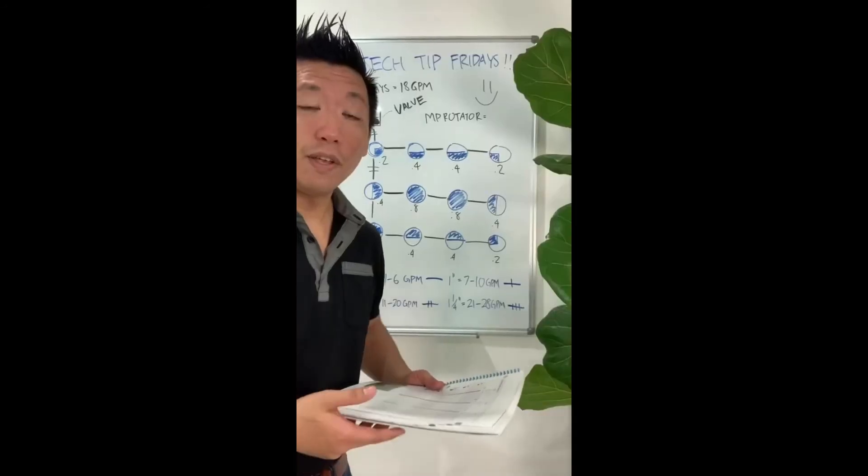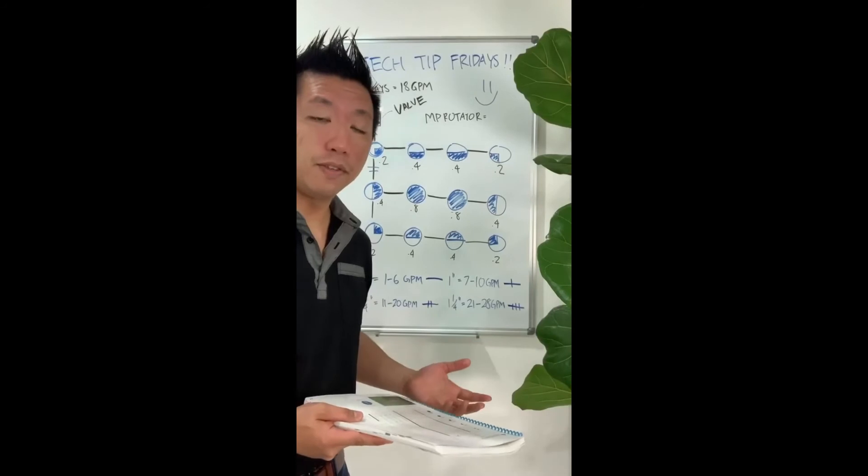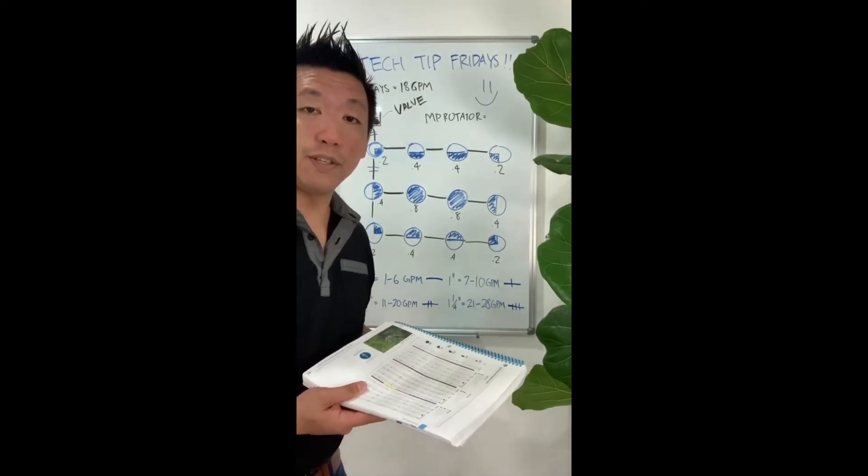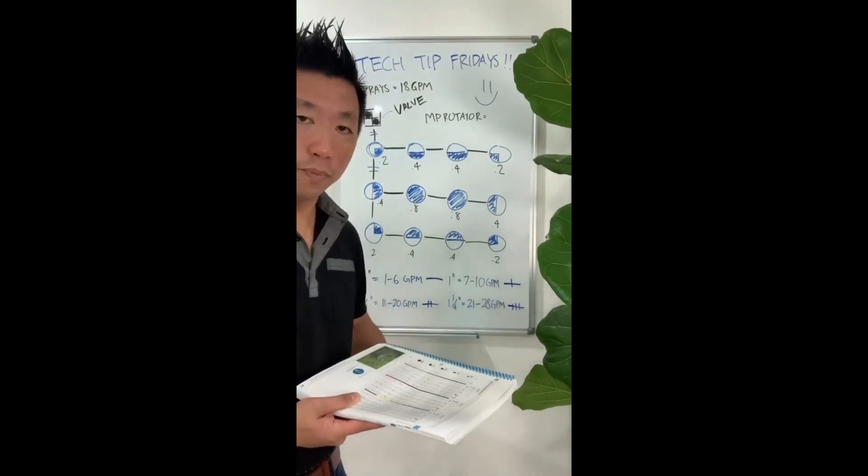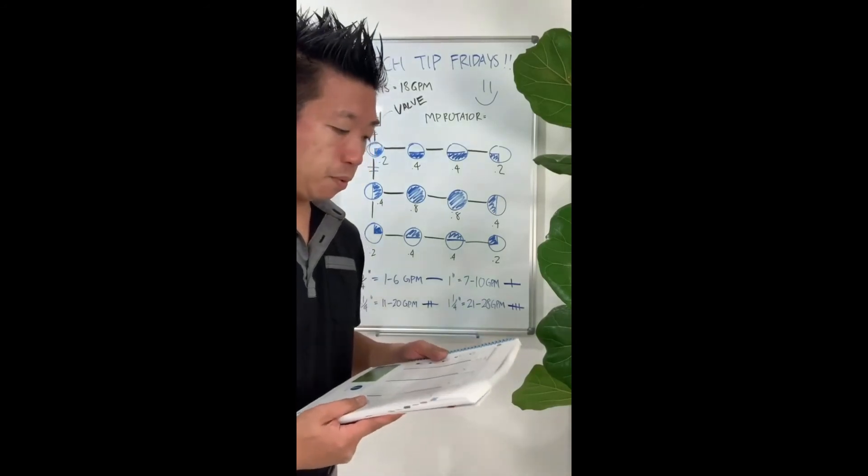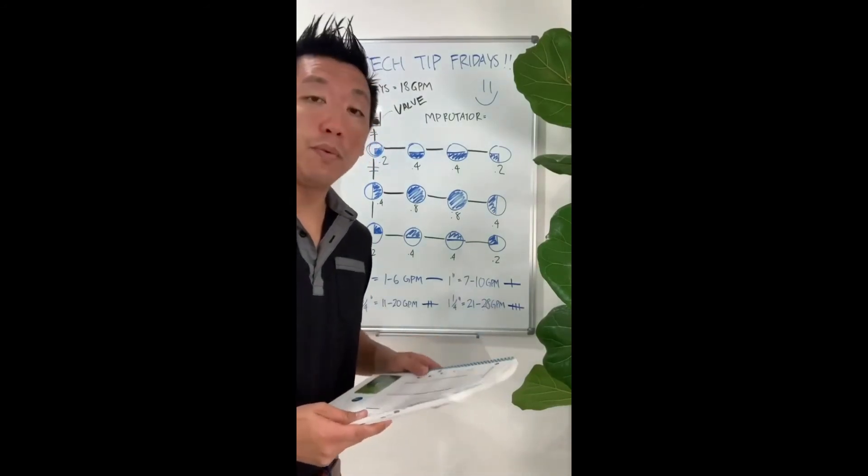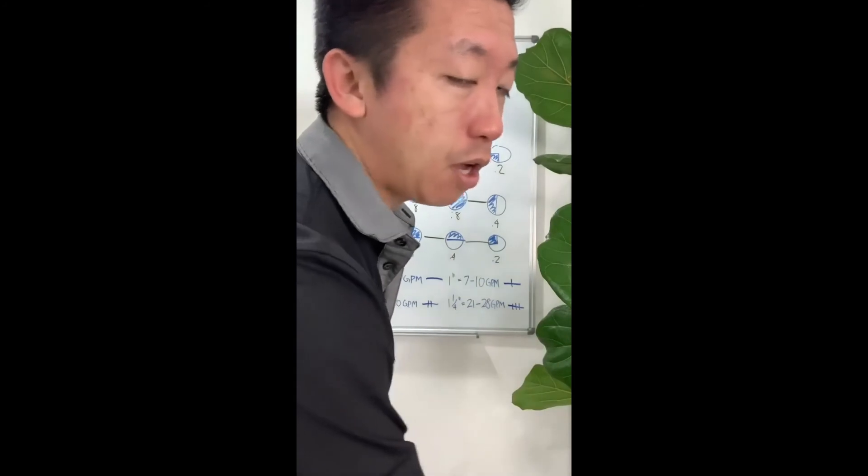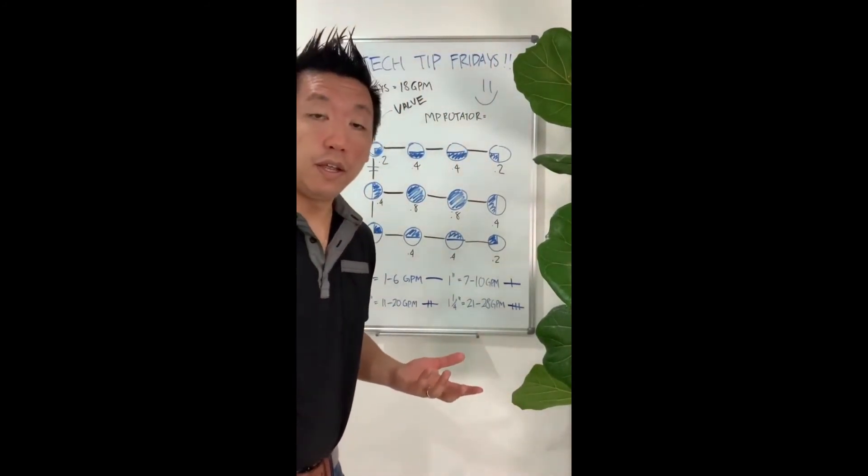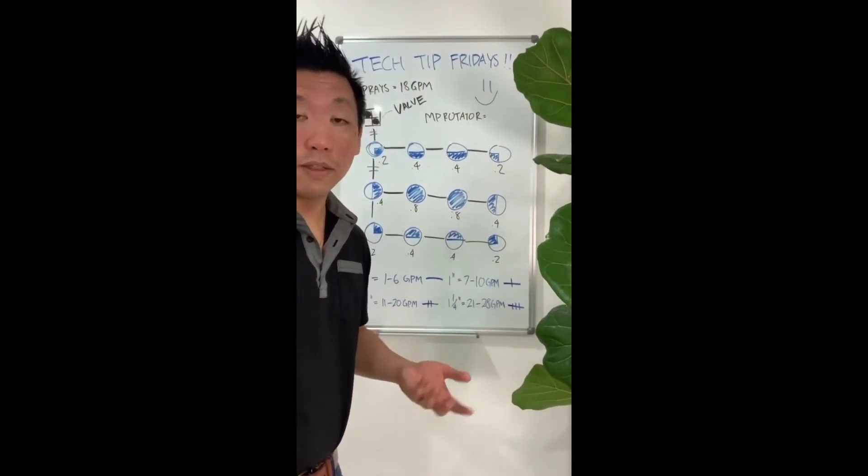So now that we have a general idea on how to pipe size, I want to do an example with MP Rotator since we went over that a couple of weeks ago. And the one that we're going to be using is the MP1000. So the MP1000 is comparable to a 12-foot throw nozzle at 30 psi.